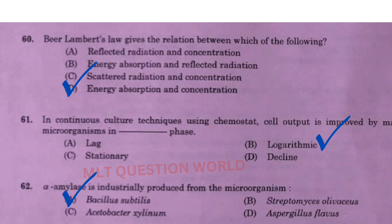Next question: In continuous culture techniques using chemostat, cell output is improved by maintaining microorganisms in dash phase — the right answer is option B, logarithmic phase. Next question: Alpha-amylase is industrially produced from the microorganism — the right answer is option A, Bacillus subtilis.